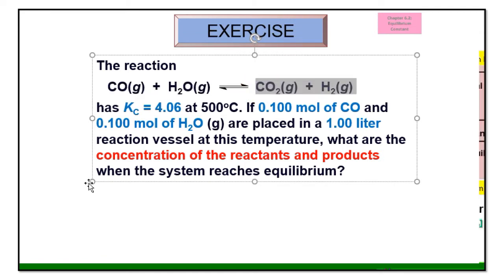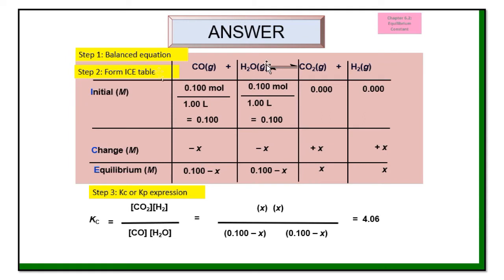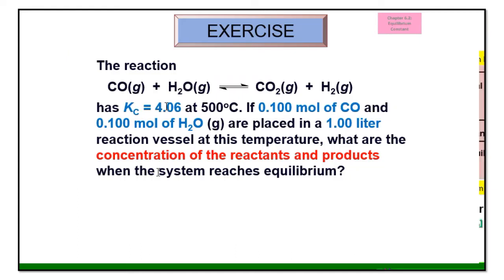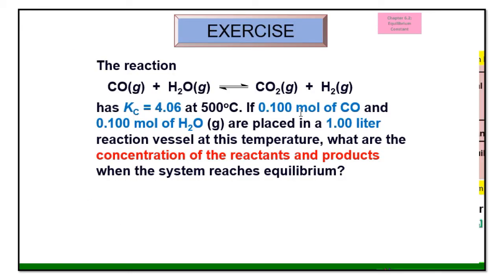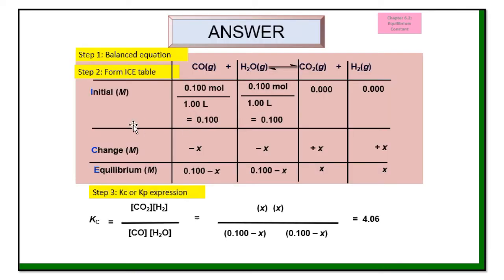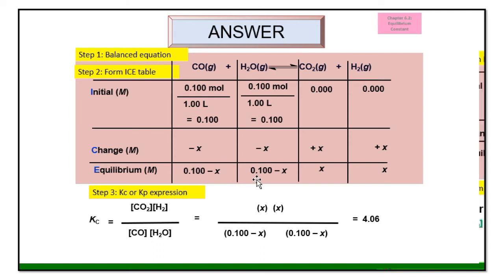Write down the balanced equation and form the ICE table using concentration since Kc is given. The initial concentration from 0.1 mol over 1 liter volume gives us 0.1 molar for CO and H2O. For the product side, there is no product yet, so we write 0, 0. Negative sign for the reactants, positive sign for products. All coefficients are 1, so we write negative x, negative x, positive x, positive x. Equilibrium row: 0.1 minus x for both reactants, and x for both products. Then write down the Kc expression and substitute: x times x over (0.1 minus x) times (0.1 minus x).